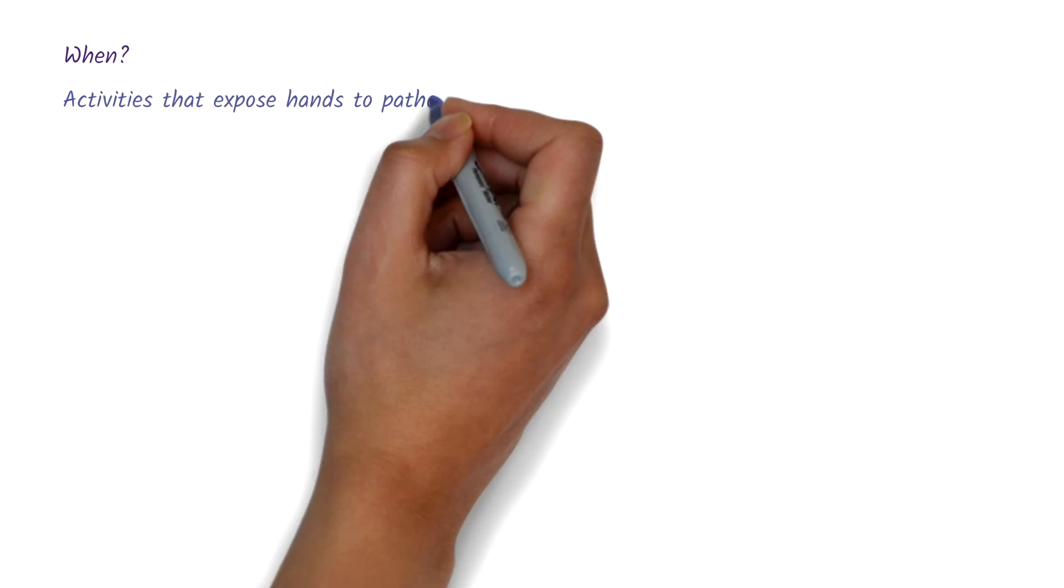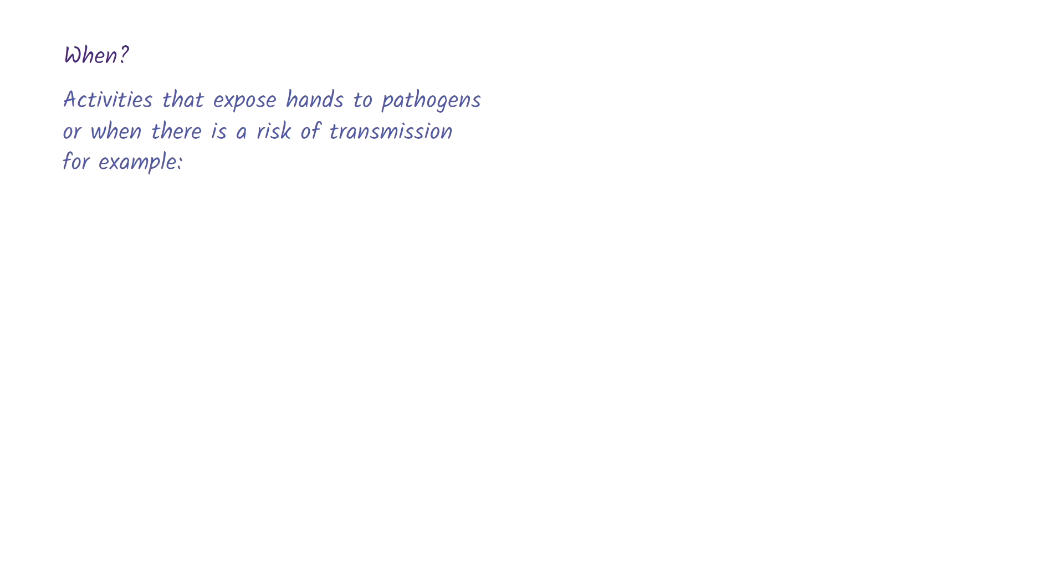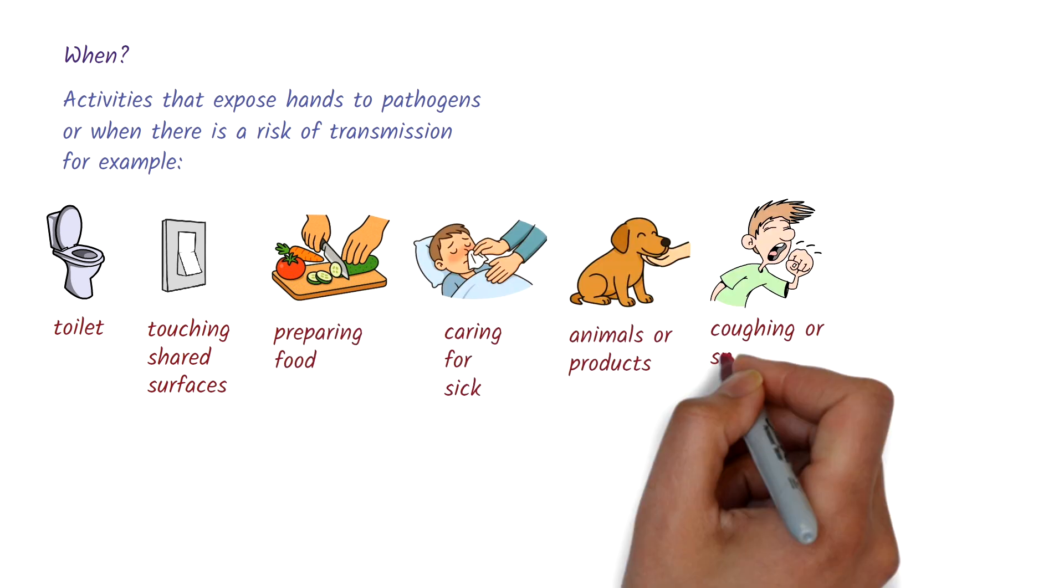So, when should hand hygiene be performed? In public settings, hand hygiene should be practiced after any activity that may expose hands to pathogens or risk transmitting them. For example, this includes after using the toilet, touching shared surfaces, preparing food, caring for the sick, handling animals or their products, coughing or sneezing, and before eating.